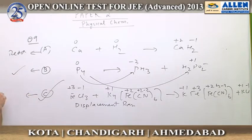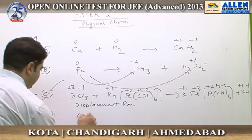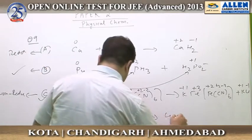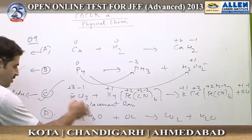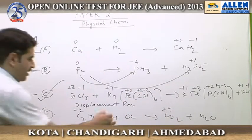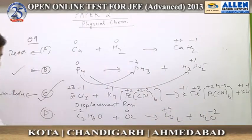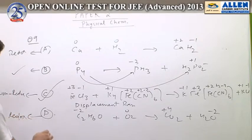Reaction C is a non-redox displacement reaction, so it is our answer. In reaction D, C2H6O reacts with O2 forming CO2 and H2O — a combustion reaction. Carbon goes from oxidation number −2 to +4 (oxidized), and oxygen goes from 0 to −2 (reduced). Reaction D is a redox reaction. Therefore, our final answer is reaction C as the non-redox reaction.